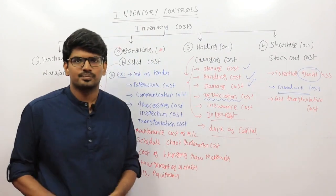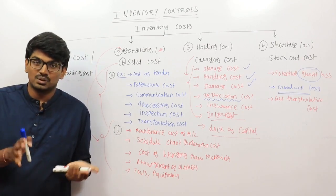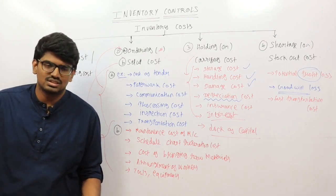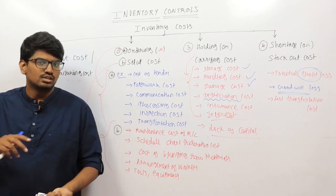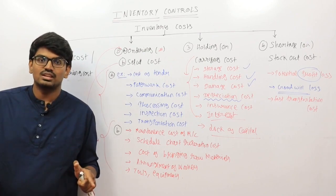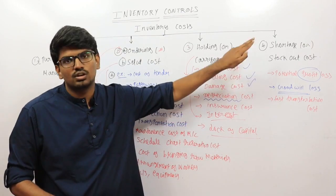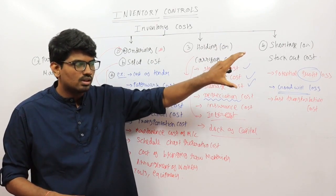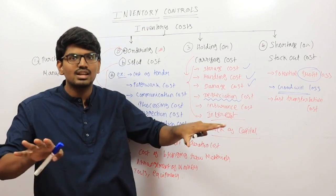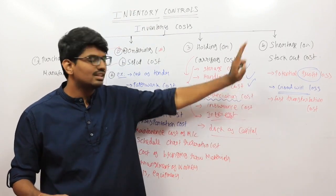Potential profit loss is one example of shortage cost. Goodwill loss is also very important. If 1,000 persons demand but you can serve only 100, the remaining 900 will think this company is not good — negative things spread very quickly, and those 900 persons will start spreading a bad name about your company. So you get goodwill loss. Another example is faster transportation cost: if there is a sudden shortage and you need to order quickly, you may go to a supplier who charges 1,000 per unit but delivers in one day, versus your usual supplier who charges 500 per unit but takes five days.